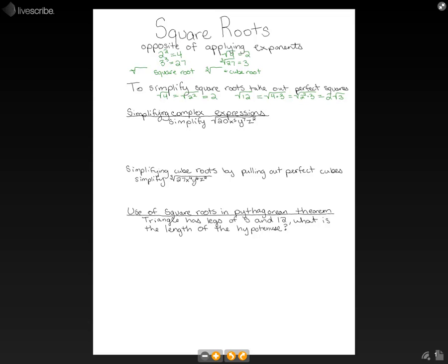So let's do a little bit more complex example and try to simplify the square root of 20x to the fifth, y to the seventh, z squared. So our first step is we're going to rewrite and group our perfect squares.